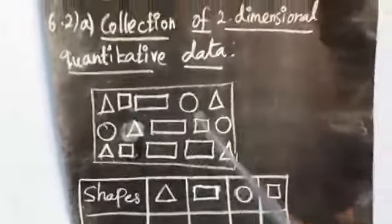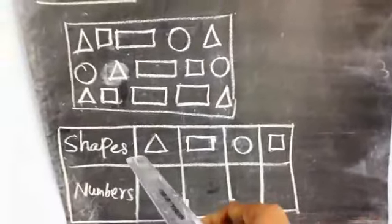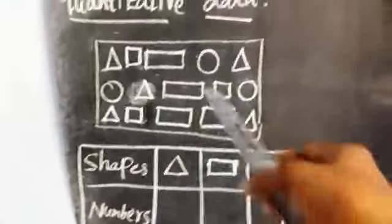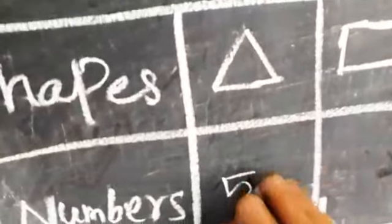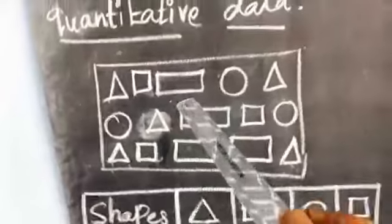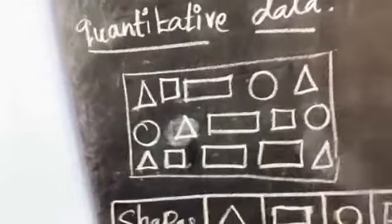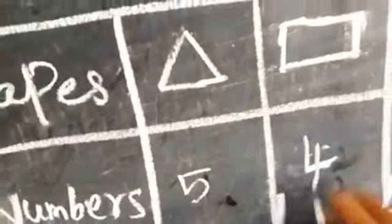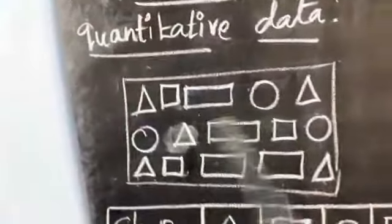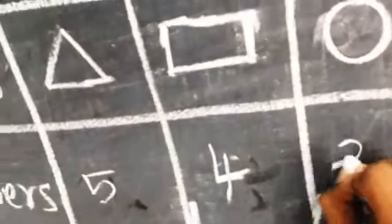Now we write the shapes and count how many of each shape there are. For triangle — one, two, three, four, five — so the number of triangles is five. How many rectangles? One, two, three, four — so write the number four. How many circles? One, two, three — so write the number three.